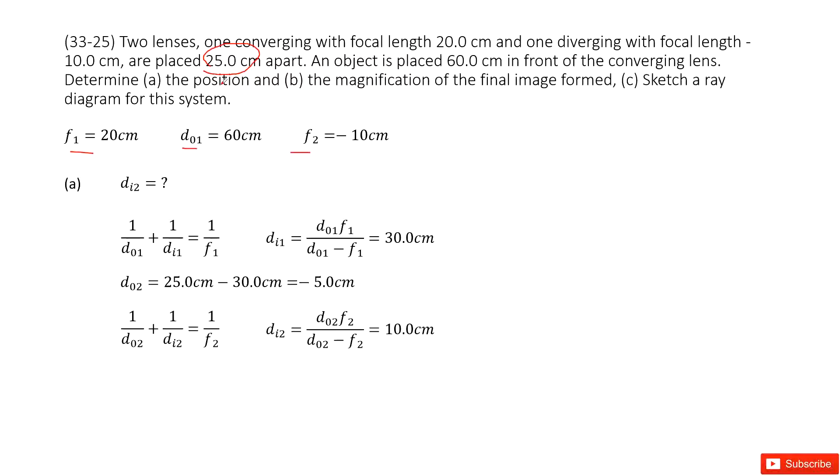First, we need to know the final position for the image. We can call it dI2. In this two lens system, we can remember the image for the first lens is the object for the second lens. So we need to find the image distance for the first lens, dI1, at the very beginning. We write down the thin lens equation. dO1 is given, dI1 we don't know yet, f1 we know. So we can solve this equation.